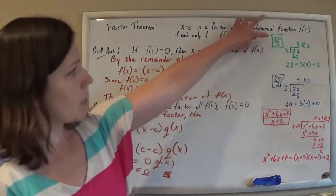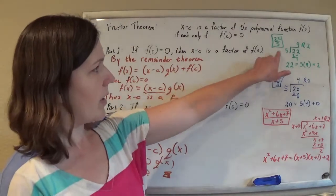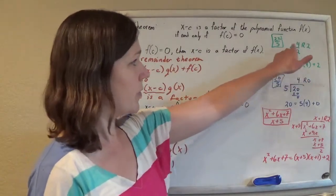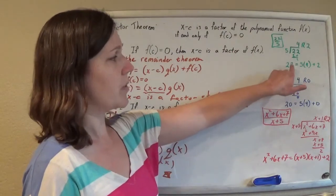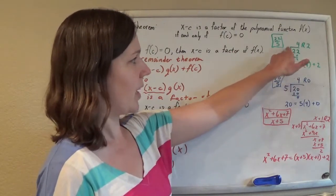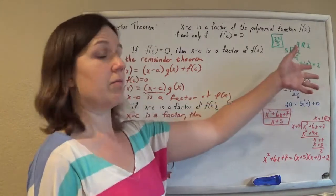Like if you had 22 divided by 5, like our division algorithm, you do 22 divided by 5 with a remainder of 2, right? And so therefore you can write 22 equals 5 times 4 plus 2, right?